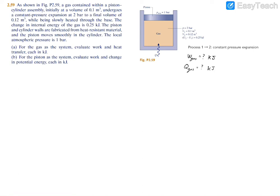In part A we're asked to find the work of the gas in kilojoules and the heat transfer of the gas also in kilojoules. Remember that work is equal to the integral from V1 to V2 of P dV. In our case, we integrate from 0.1 to 0.12 meters cubed, and pressure is given as 2 bar, which we convert to 200 kilopascals.